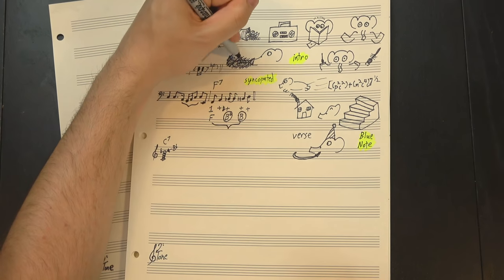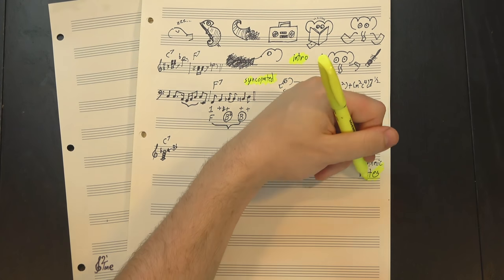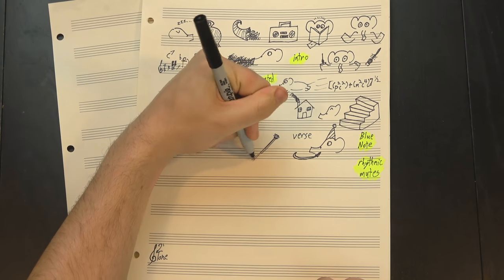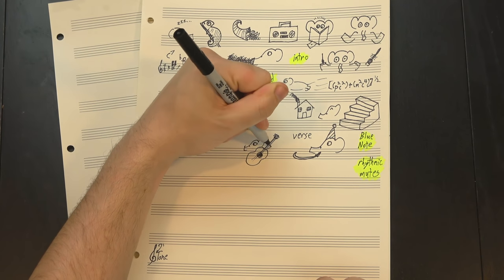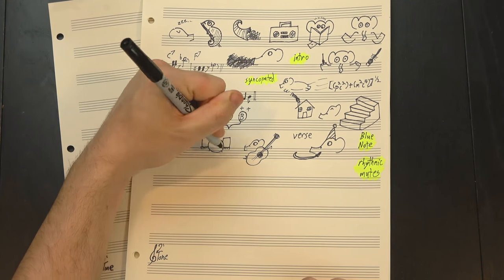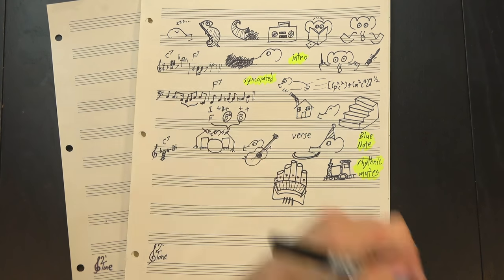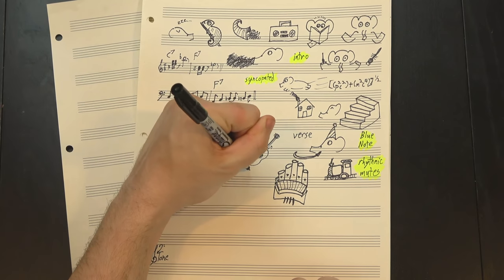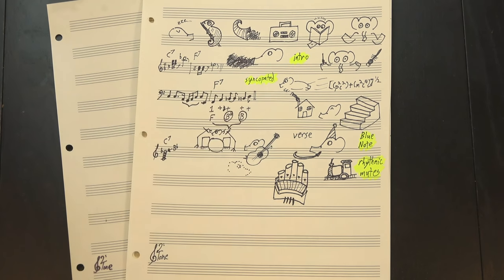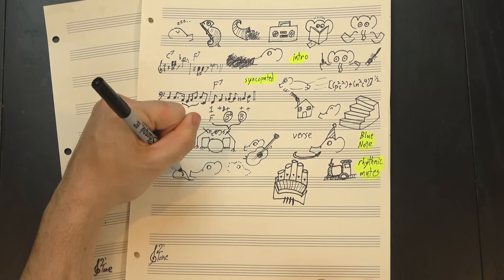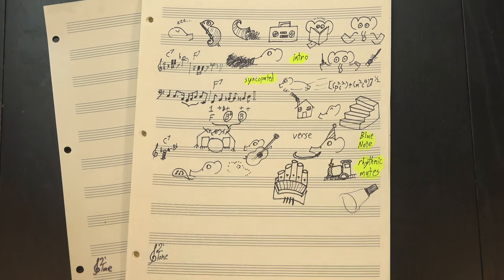From there we move into the verse, where the horns drop out and the guitar switches to just rhythmic mutes, where they deaden the strings with their hand and then strike it to create a percussive sound with no real pitch. These are placed on beats 2 and 4, kinda like bonus snare drums. The bass keeps chugging along, and we also hear what sounds like an organ in the background, quietly laying down the actual chord so the harmony doesn't get completely lost. But this section is dominated by the vocals. Everyone is staying out of Aretha's way.